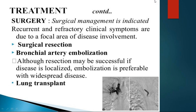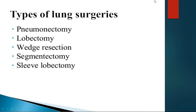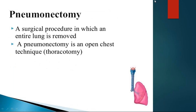Although surgical resection may be successful for localized disease, for larger or widespread involvement we prefer bronchial artery embolization. The next option is lung transplantation. Bronchial artery embolization is used for limited disease, where a catheter delivers small particles that block blood supply to the affected area, mainly to relieve hemoptysis. Lung surgeries include pneumonectomy, lobectomy, wedge resection, segmentectomy, or sleeve lobectomy. Pneumonectomy is the surgical removal of the entire lung, performed via thoracotomy.